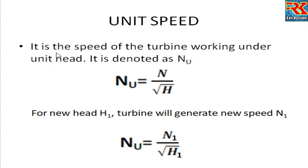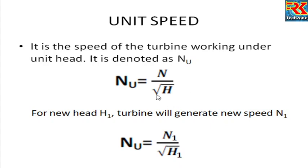Unit speed is the speed of a turbine working under unit head. It is denoted as Nu. Nu is the unit speed, and the formula is Nu = N divided by root H, where N is the speed and H is the head.